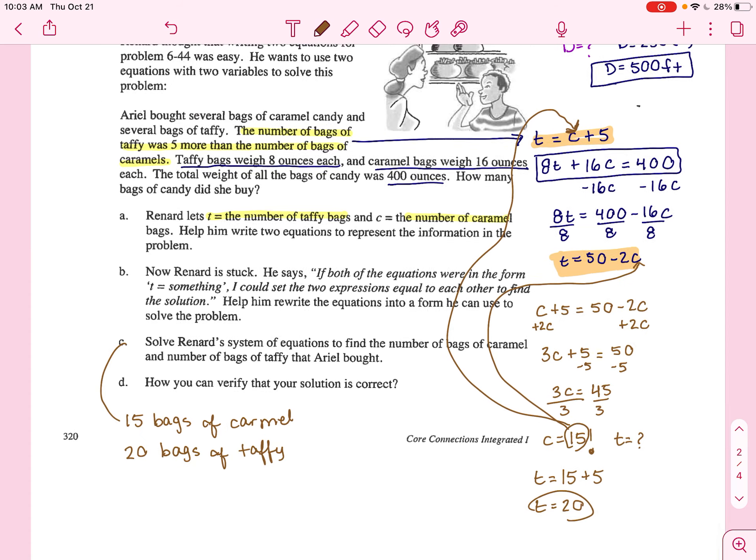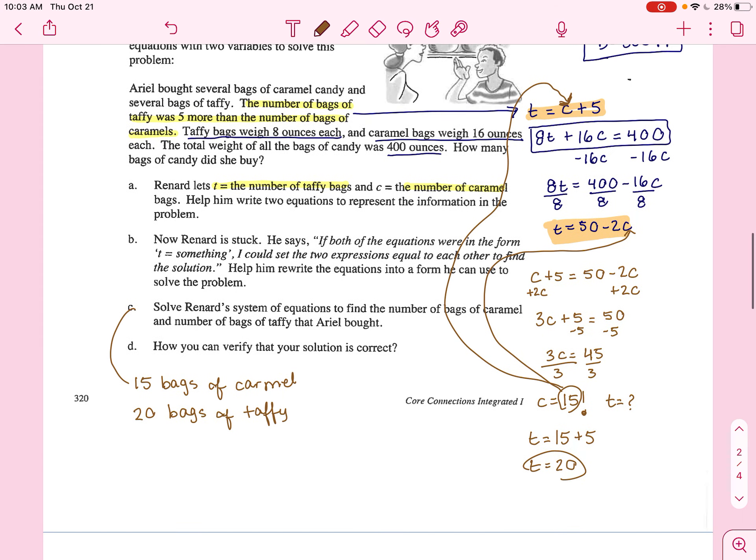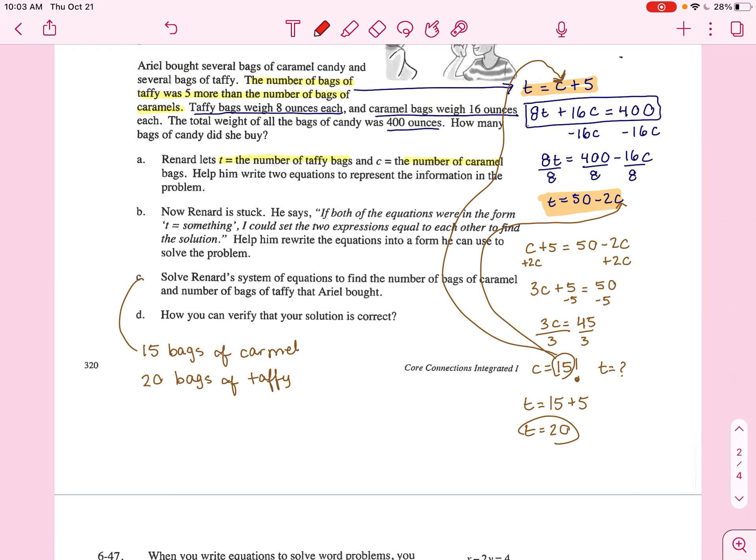Part D asks, how can you verify this? Well, we can use one of our equations plug in and see if it really worked. Let's use this original equation. So we have 8T plus 16C equals 400. Let's see if I plug in 20 for T and plug in 15 for caramel. Am I going to get 400? And you do. So we must have solved for these two variables correctly.